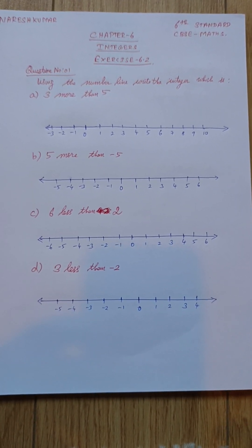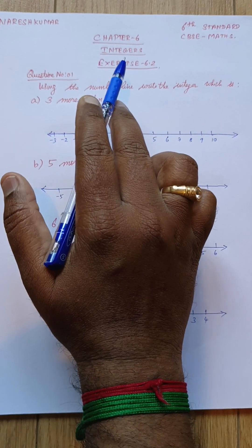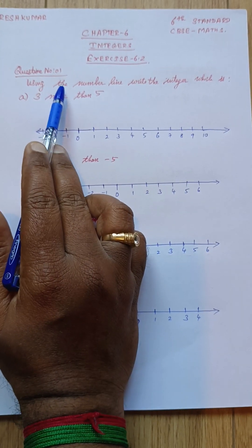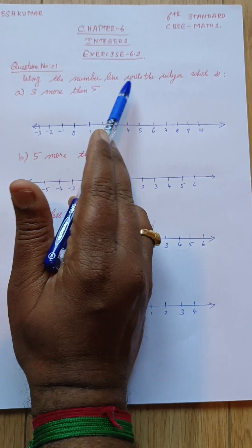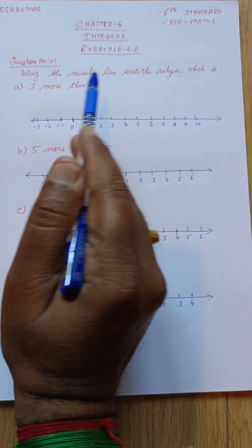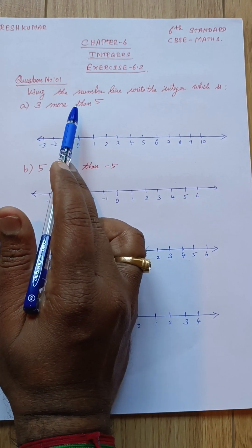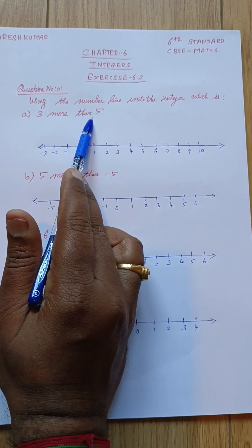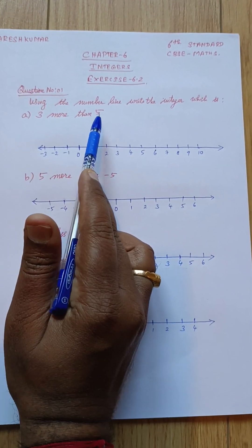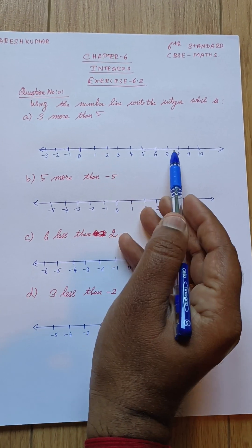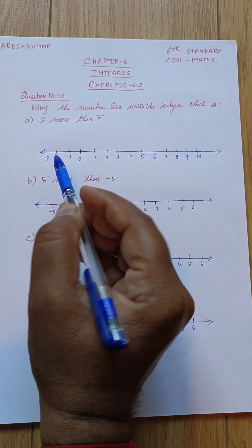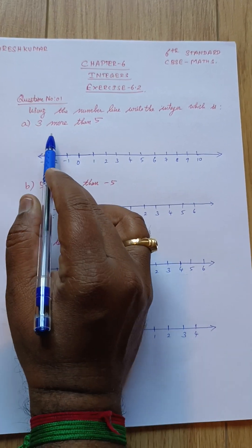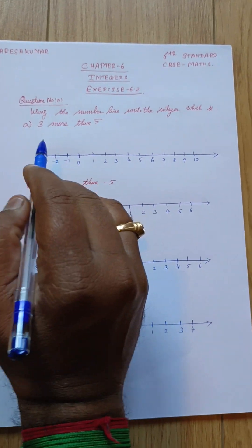Class 6, standard CBSE Math, Chapter 6 - Integers, Exercise 6.2, Question 1: Use the number line to write the integer. They are asking that according to the given statement, we need to point out on the number line. The number line should be designed according to the given numbers.